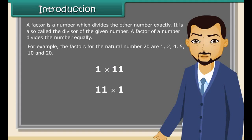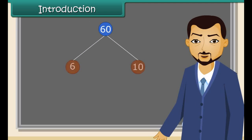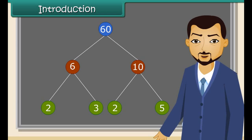For example, the number 11 can be written in two ways, which implies that for any prime number the factors are 1 and the number itself. Factors for a given number can also be found using the factor tree method. We can also express algebraic expressions as products of their factors. In this chapter, we are going to discuss how to find the factors of an algebraic expression.